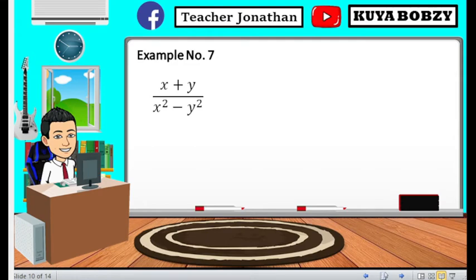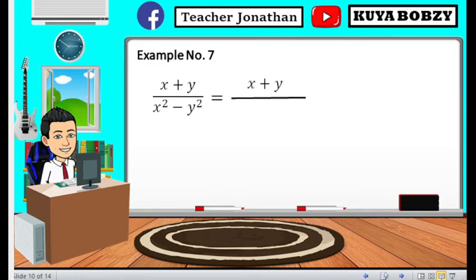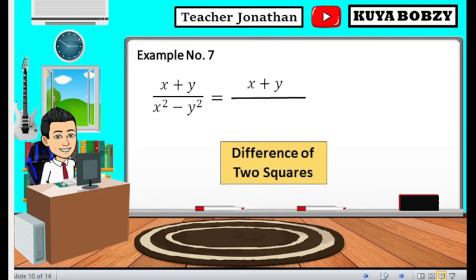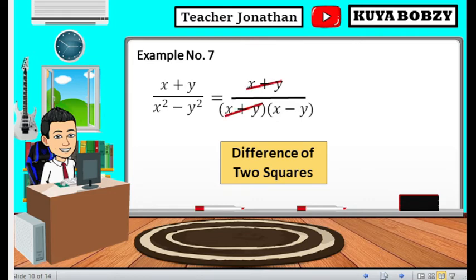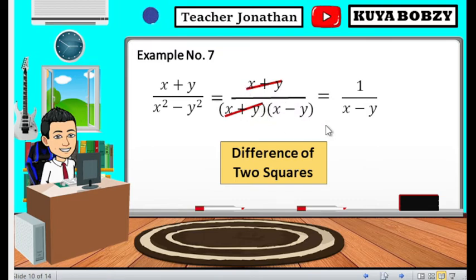Example number 7. We have x plus y all over x squared minus y squared. The numerator is already in its simplest form. For the denominator, this is an example of difference of two squares — if you're not familiar with this, check the link in the description. The factors for the denominator are x plus y times x minus y. We can cancel out x plus y, leaving 1 over x minus y. Remember that any real number or polynomial always has an invisible factor of 1.